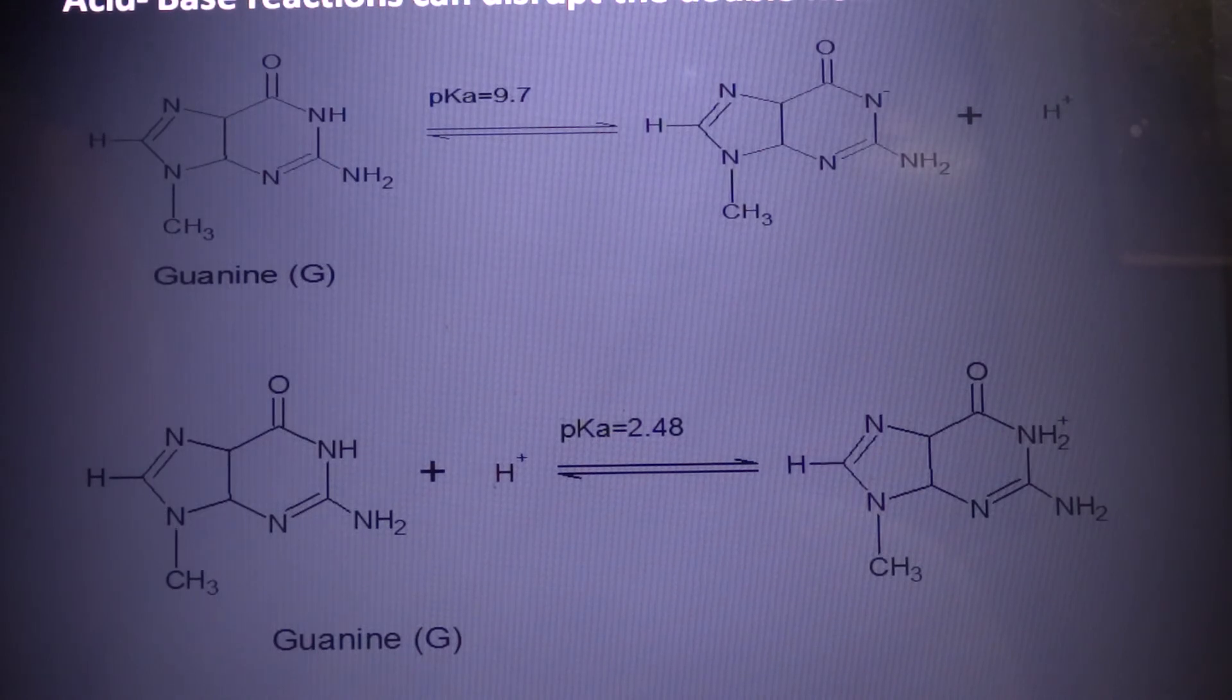The DNA double helix is also destabilized by low pH, around 5. Some of the hydrogen bond acceptors that participate in base pairing become protonated. In their protonated forms, these bases can no longer form hydrogen bonds, and the double helix separates. Thus, acid-base reactions that remove or donate protons at specific positions on the DNA bases can disrupt the double helix.